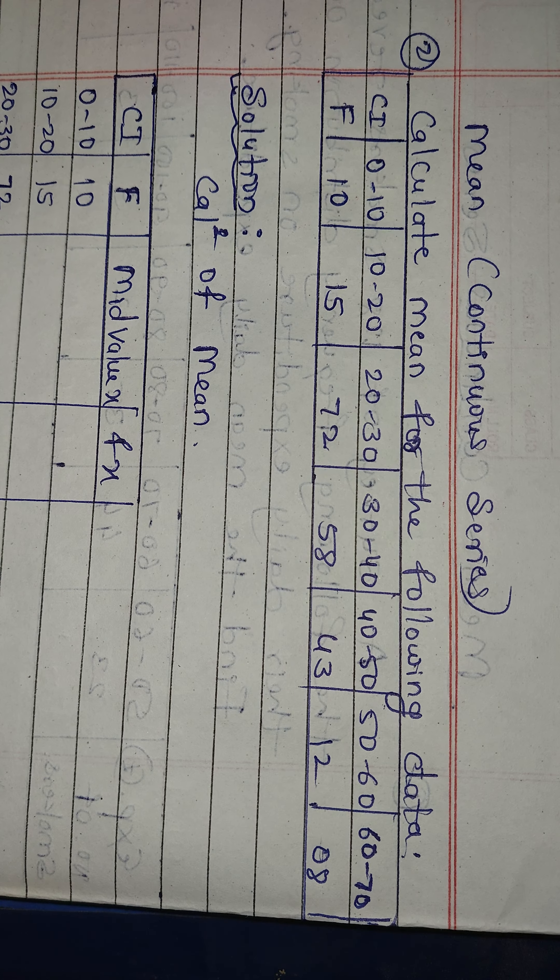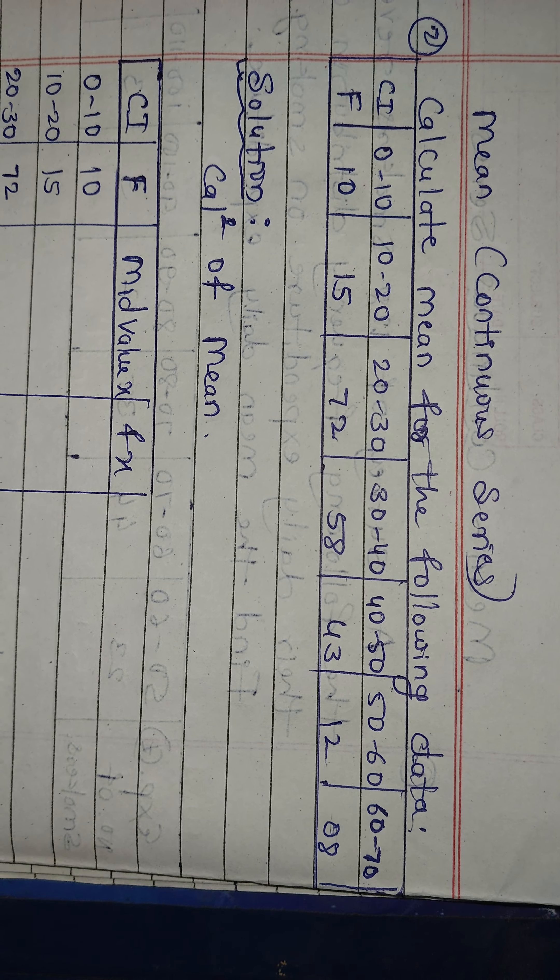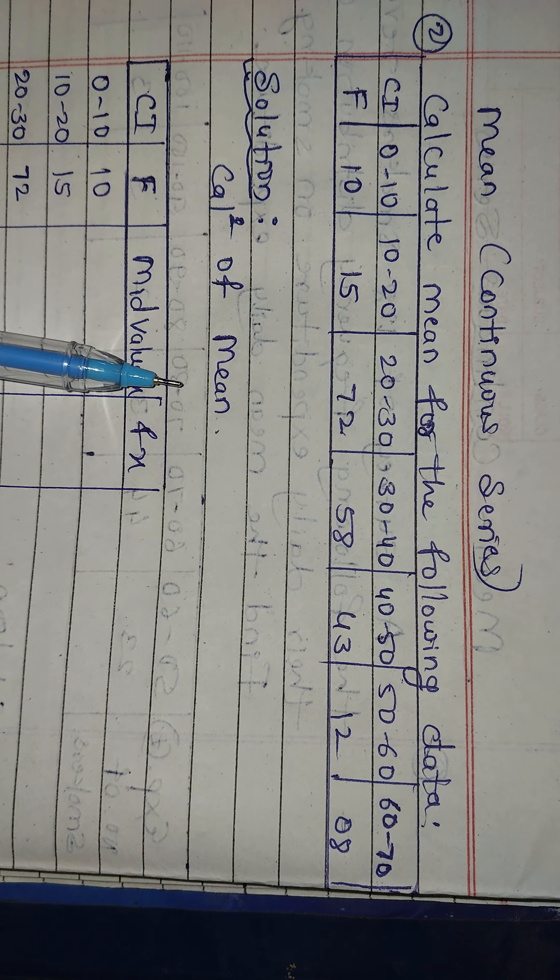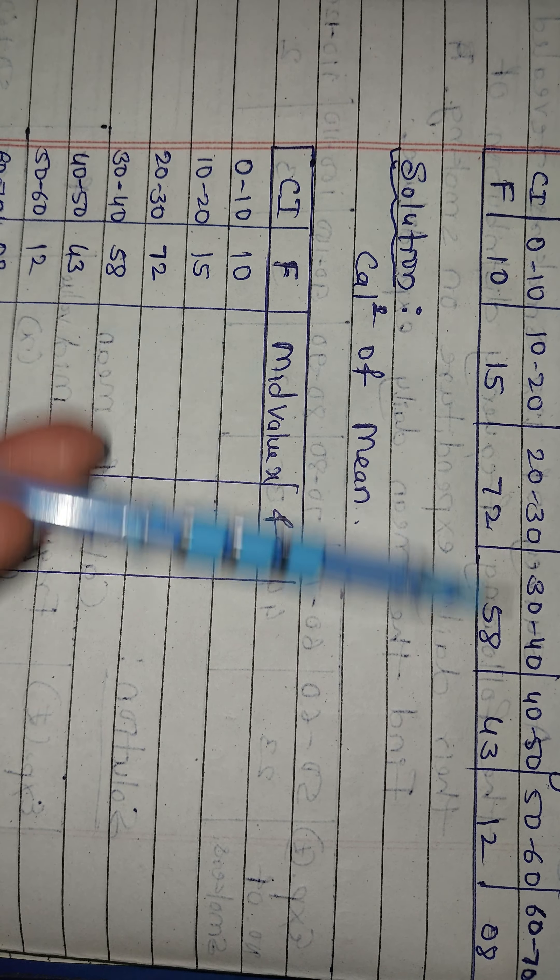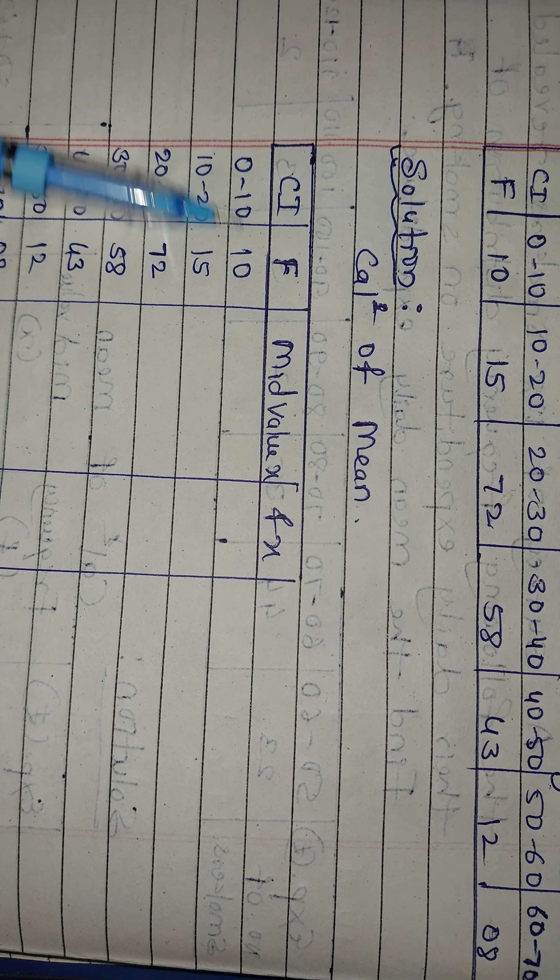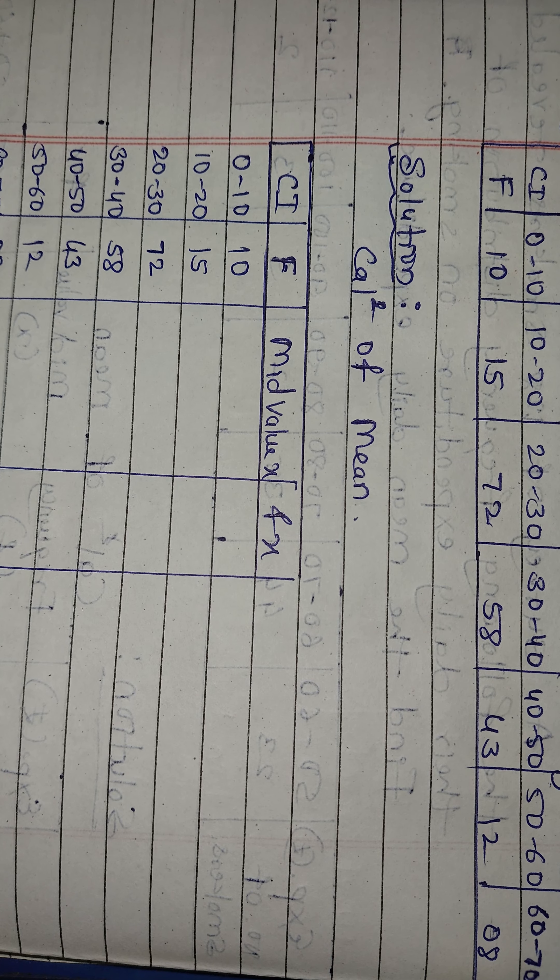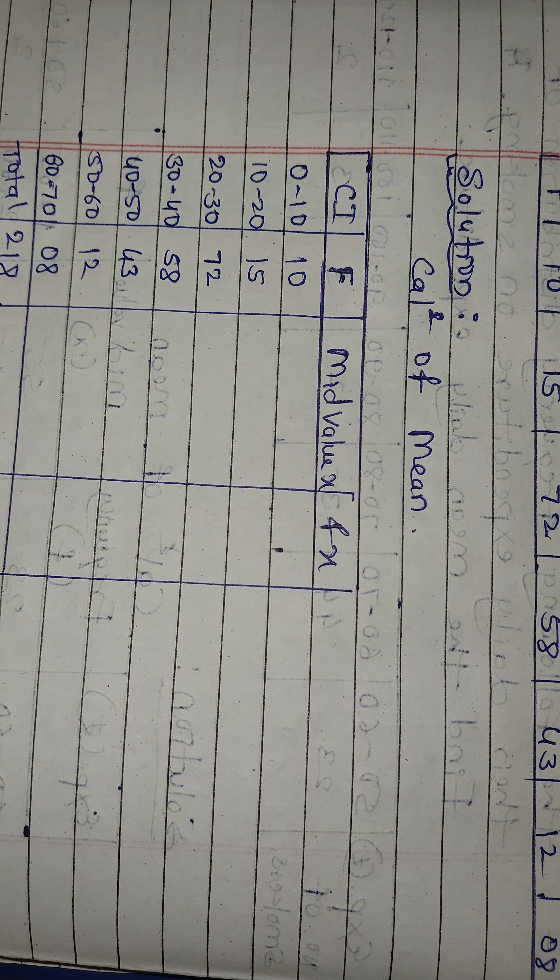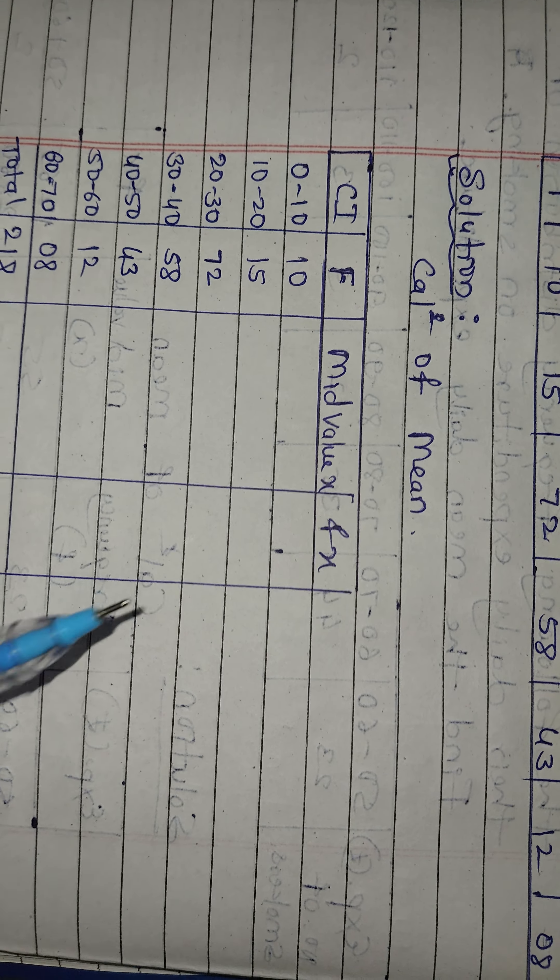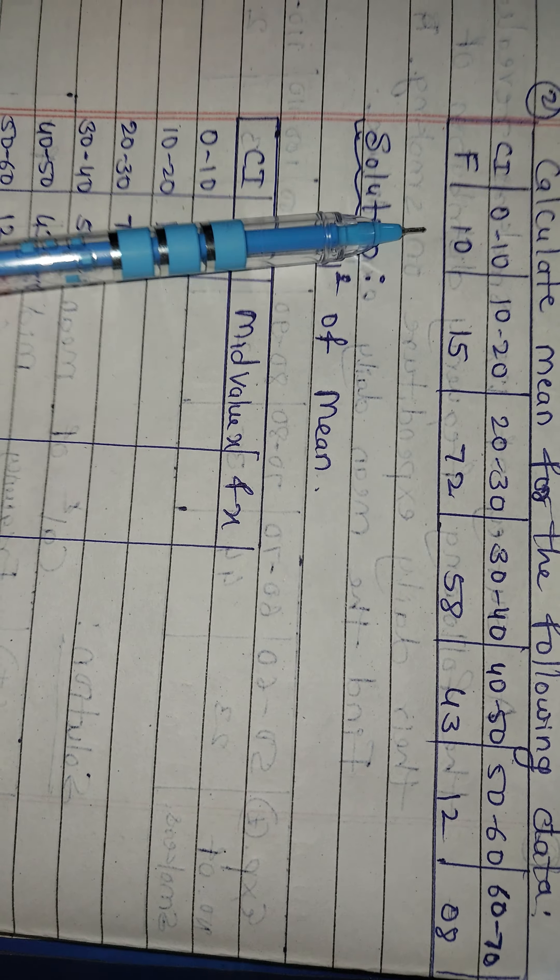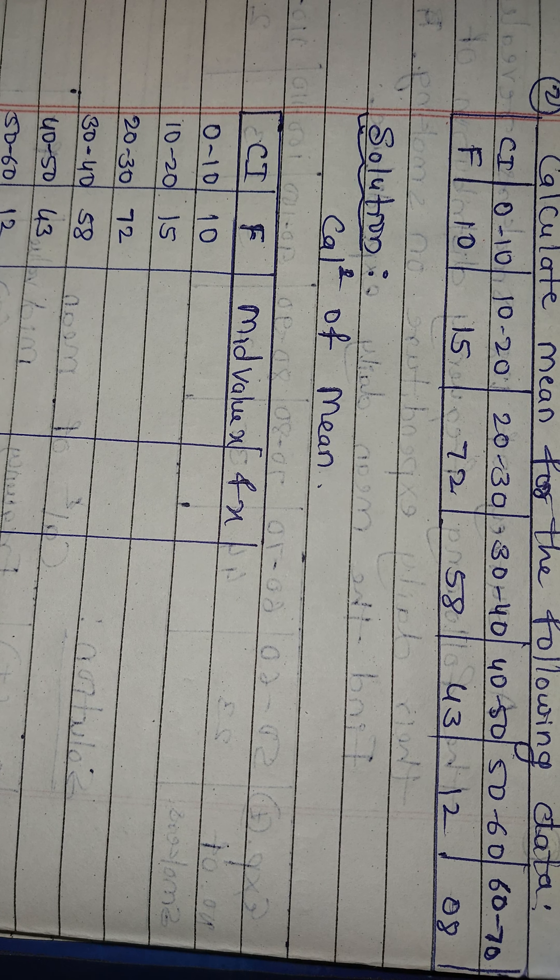Now in part one we calculated the mean. Solution: calculation of mean. CI column - class interval - write as it is. 0 to 10, 10 to 20, 20 to 30, up to 60 to 70. Then F column with values as it is: 10, 15, 72...